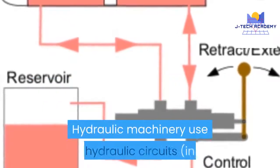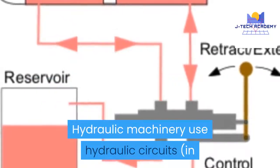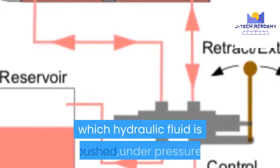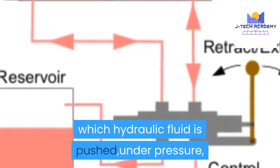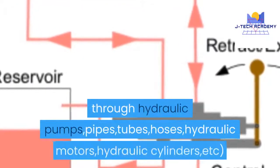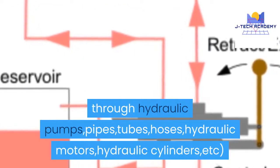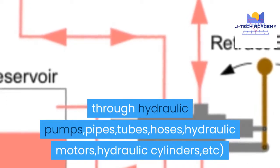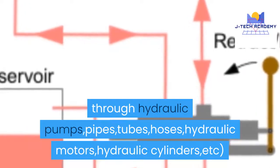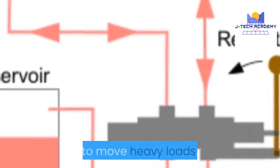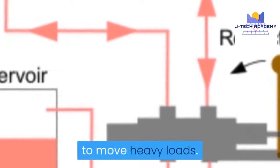Hydraulic machinery uses hydraulic circuits, in which hydraulic fluid is pushed under pressure through hydraulic pumps, pipes, tubes, hoses, hydraulic motors, hydraulic cylinders, etc., to move heavy loads.